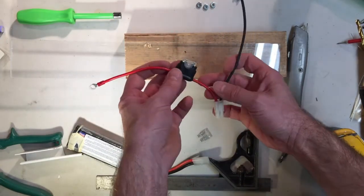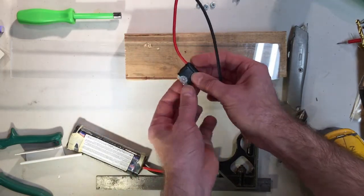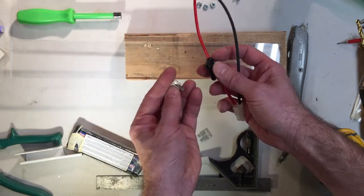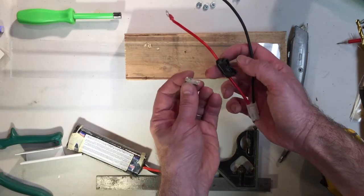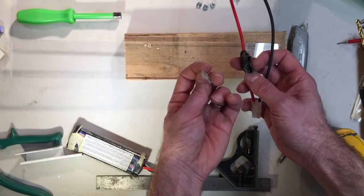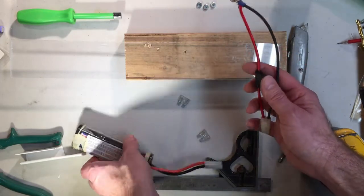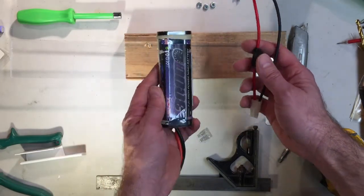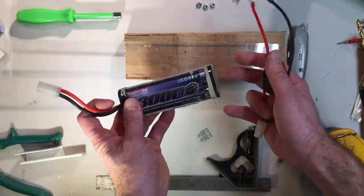So notice I also have a fuse. This is an inline fuse in here. And that's for protection, for safety, and also for protecting your circuits and your battery. So this one's a 25 amp fuse. They come in all different sizes. And so these batteries, if they get short-circuited, can catch on fire. So you want to be safe. Always have a fuse in there.